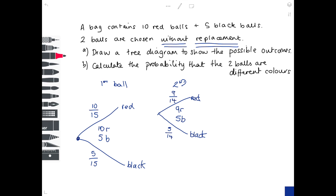Now go right back to the beginning. If the first ball chosen is black, the second ball can again be red or black. Going back to the original, you still have ten red. You started with five black and chose one, so you're left with four black — fourteen balls in a different ratio. So a red this time is ten out of fourteen and a black is four out of fourteen.